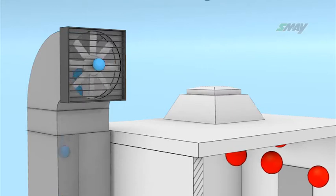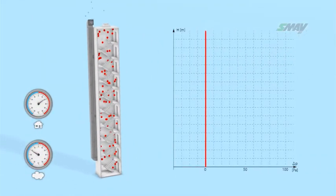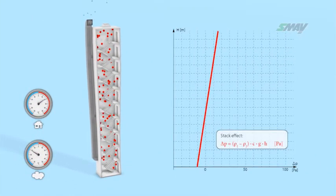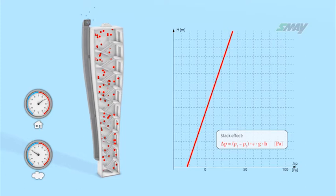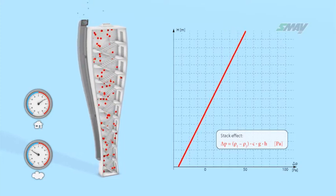However, if for that same system air is supplied to the stairwell at a temperature significantly below that of the inside, then a pressure gradient will occur as a result of the stack effect.